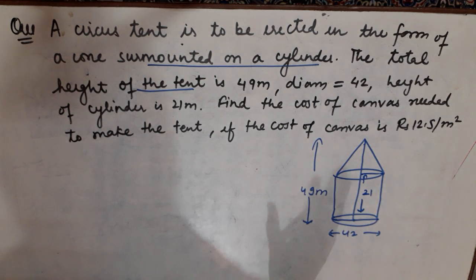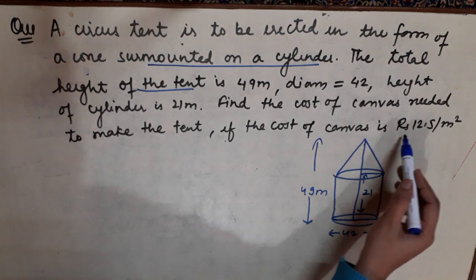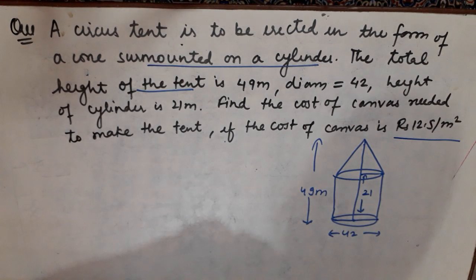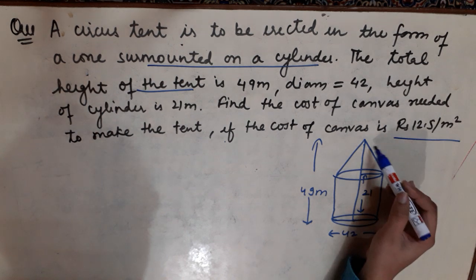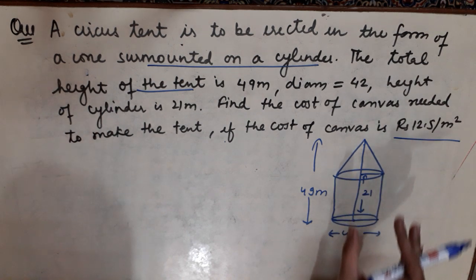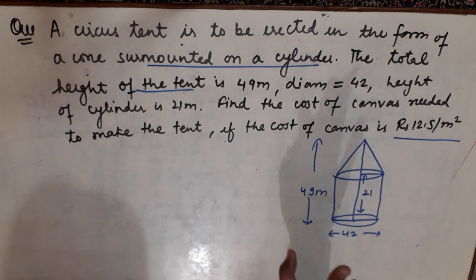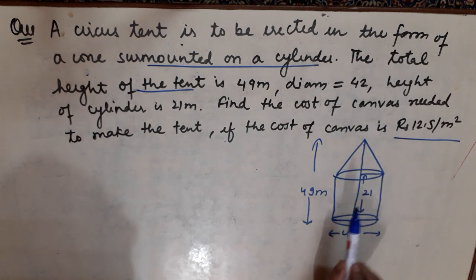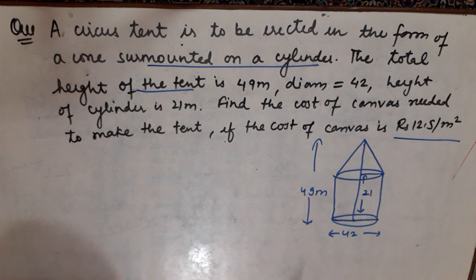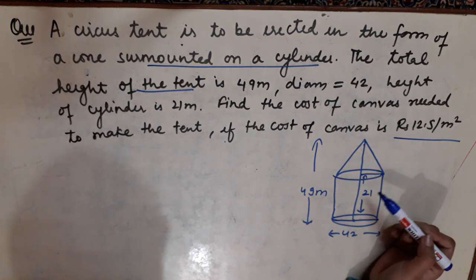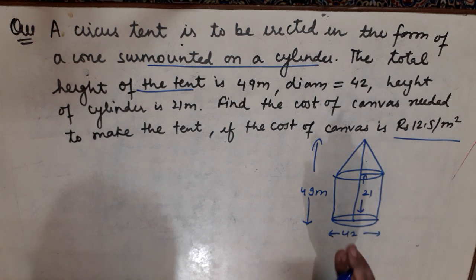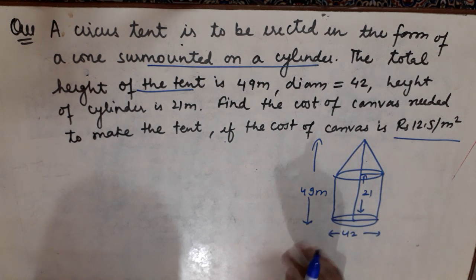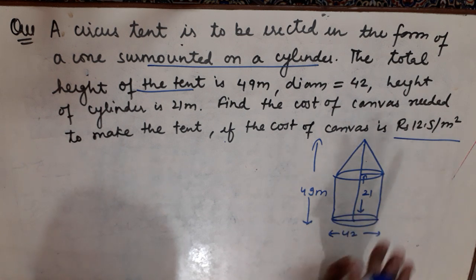Find the cost of canvas needed to make the tent. For covering this circus tent, you have to find the curved surface area — not the total surface area. The curved surface area includes the surface of the cone and the cylinder. You find each one and add them to get the total curved surface area of the tent.